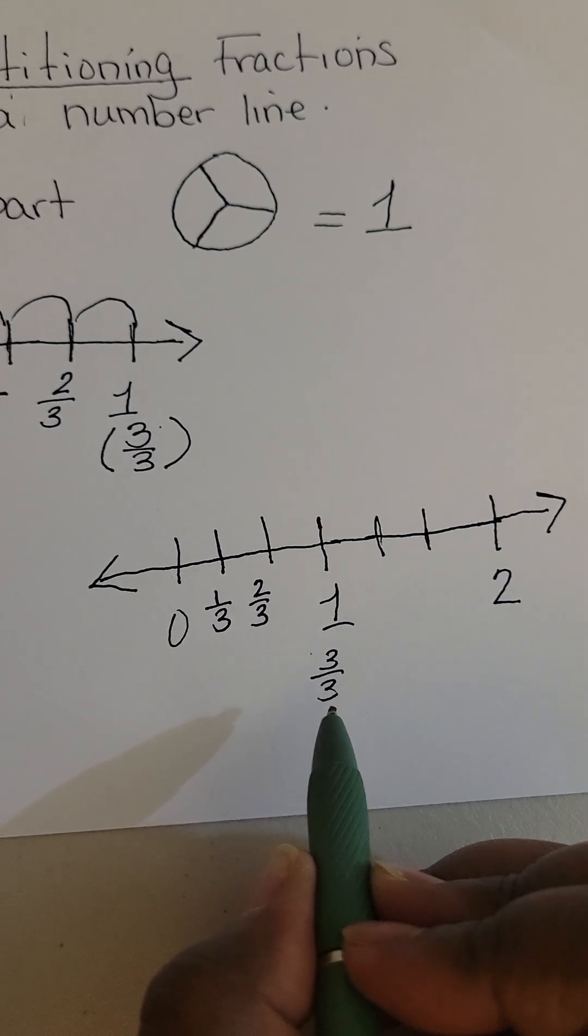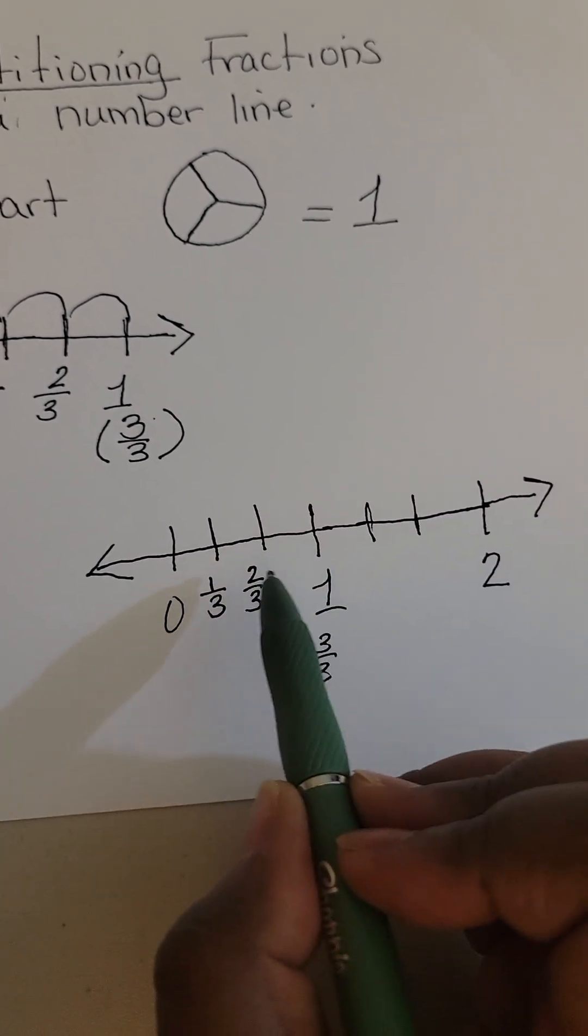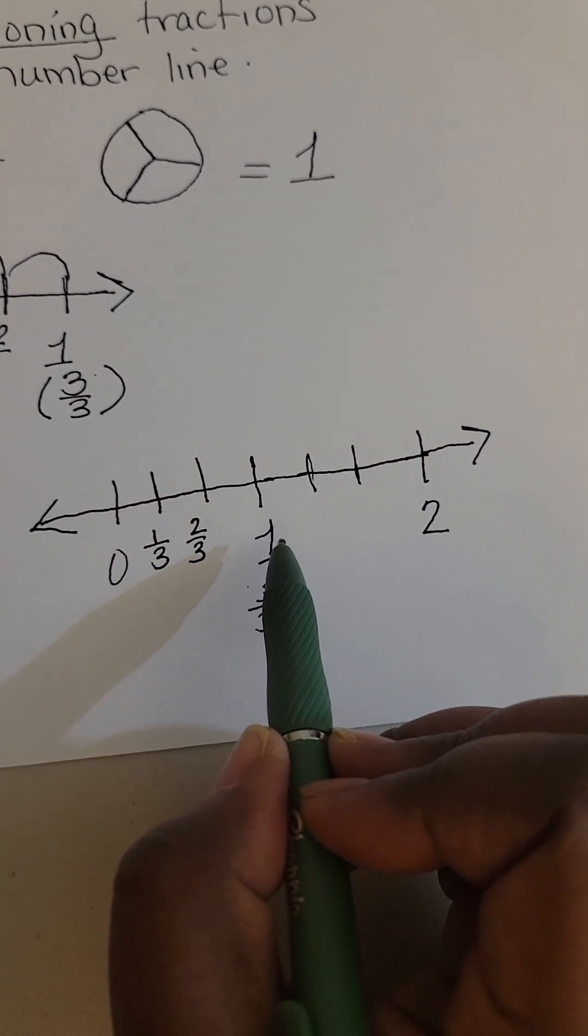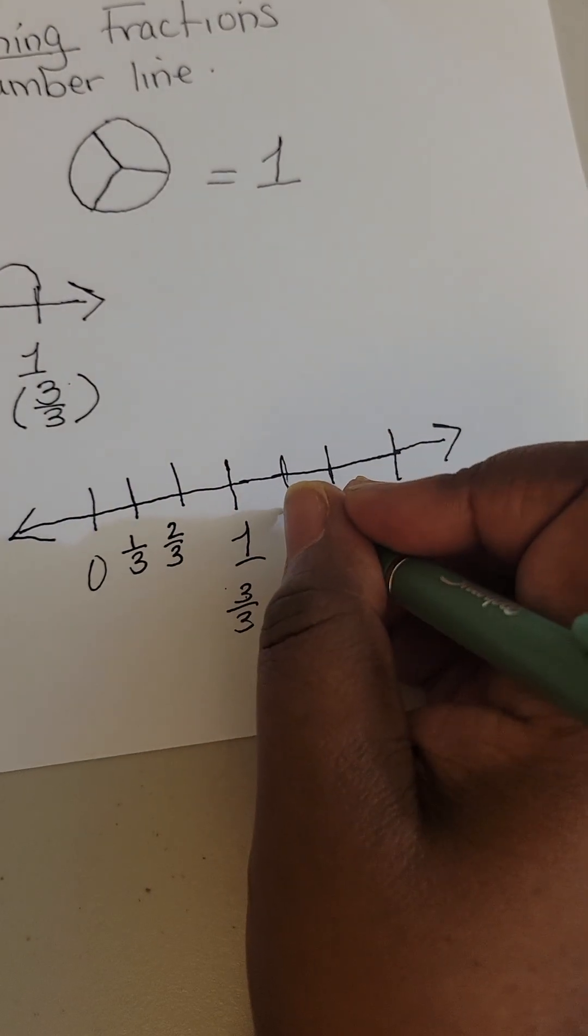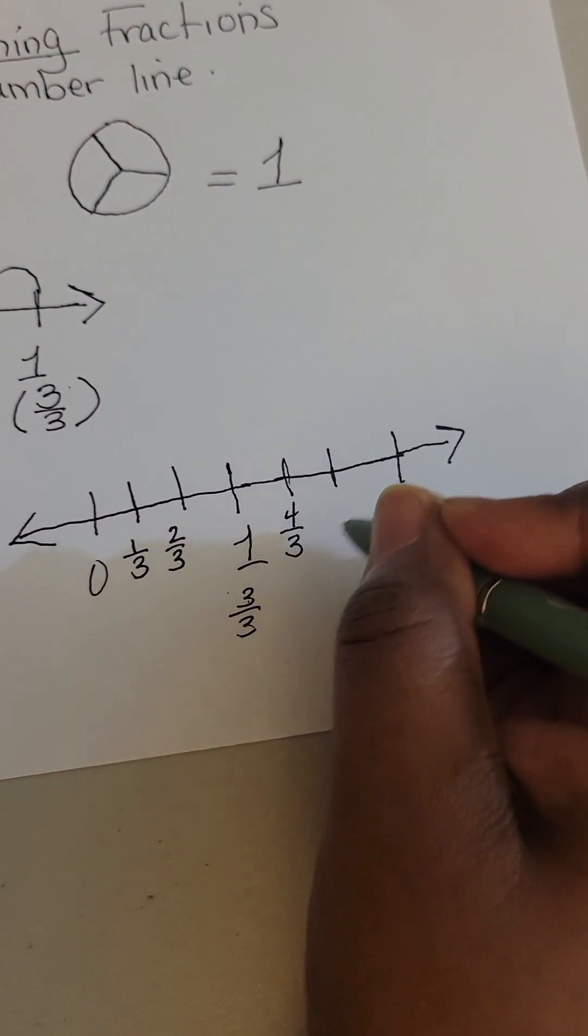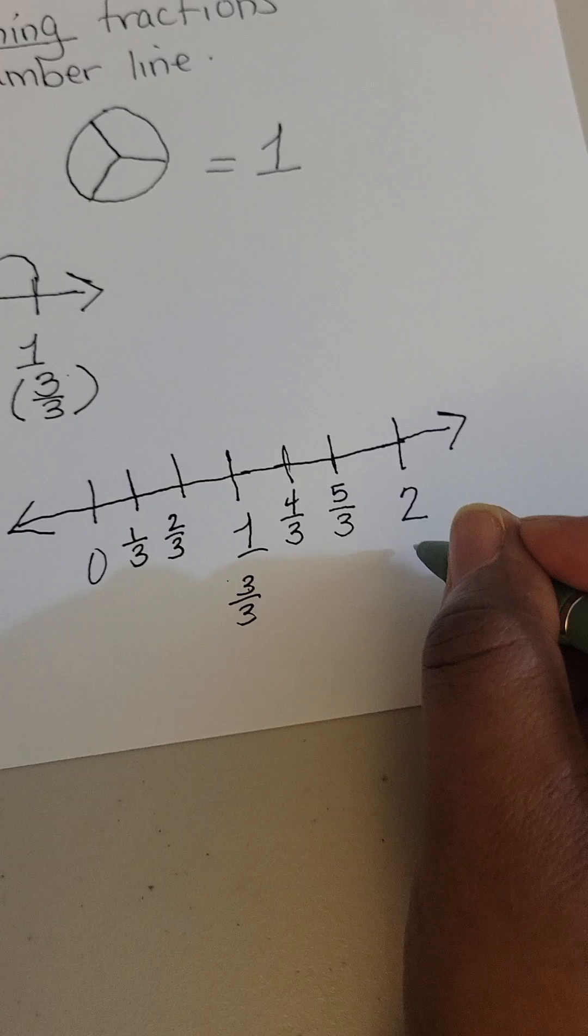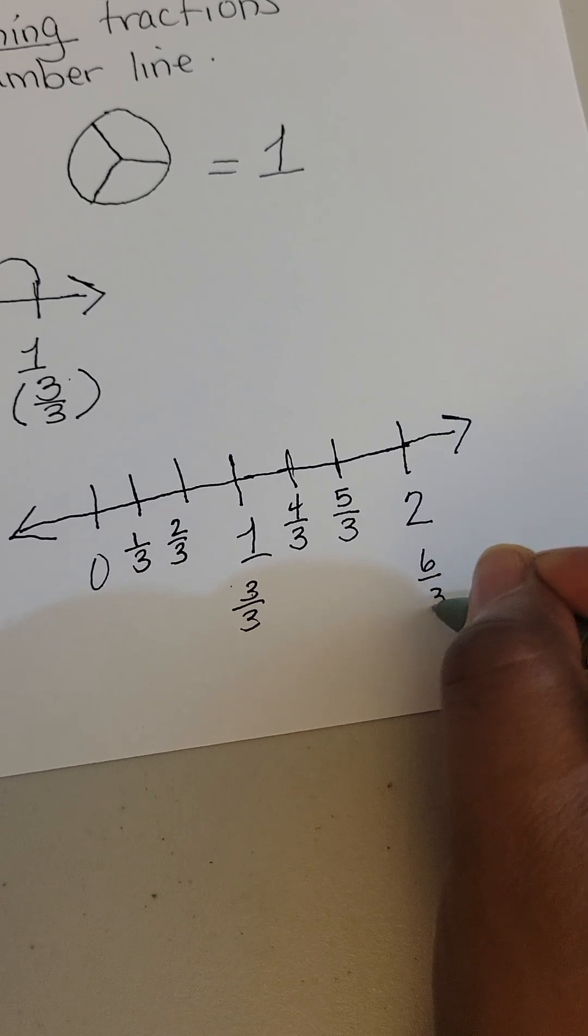And I'm going to keep counting with my denominator of 3. So now we're going into improper fractions. This is 3 over 3, this is 4 over 3, this is 5 over 3, and this is 6 over 3.